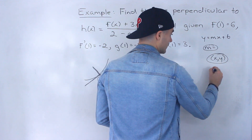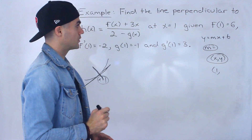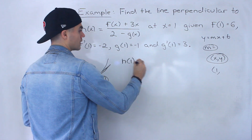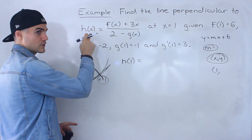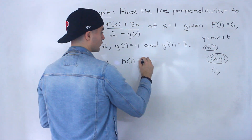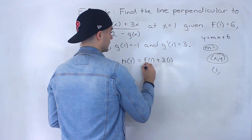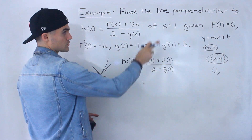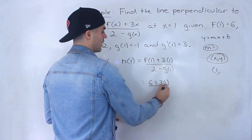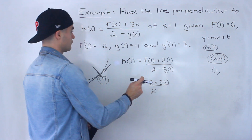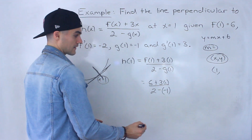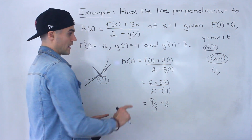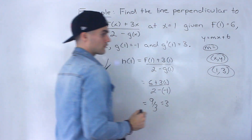Notice that we already have half of the coordinate — we know it's happening at an x value of 1. We don't have the y value, but we can figure it out. We can find h of 1 by plugging in 1 for all the x's: f of 1 plus 3 times 1, all over 2 minus g of 1. f of 1 is 6, so we get 6 plus 3 over 2 minus negative 1, which is 9 over 3, equal to 3. So the y value at x equals 1 is 3, giving us the coordinate (1, 3).